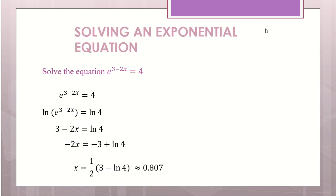Moving on — if you have something like e to the power of (3 minus 2x) equals to 4, whenever you have an exponential, you have to apply ln to solve it. So applying ln: the (3 minus 2x) will come in front, and you're left with ln e, which is 1, so it goes away. Then you can solve to find x.